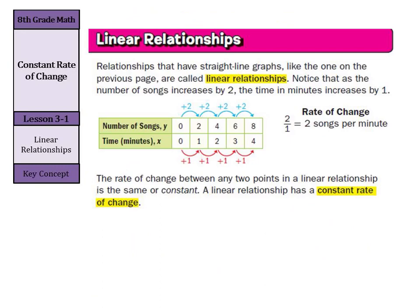Now, linear relationships are relationships that have straight line graphs like the one we just did. Notice that as the number of songs increased by two, the number of minutes increased by one. So we had a rate of change of two songs per one minute. Notice how the Y is also on top over our X. The rate of change between any two points in a linear relationship is the same or constant.